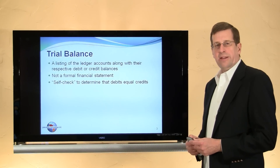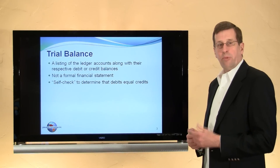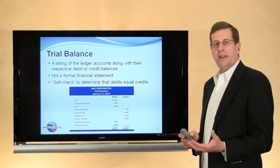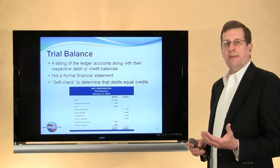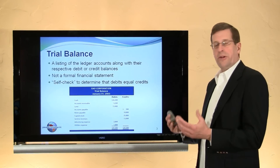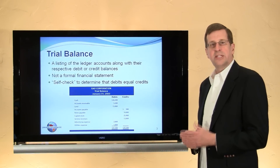In an automated accounting system, a trial balance may not even be necessary, although one could be printed off. The trial balance here for this particular company shows all of the accounts in use along with their respective balances. Notice in particular that total debits equal total credits — this is not the same as total assets, expenses, revenues, or equities; it's merely all of the debits and all of the credits summarized.